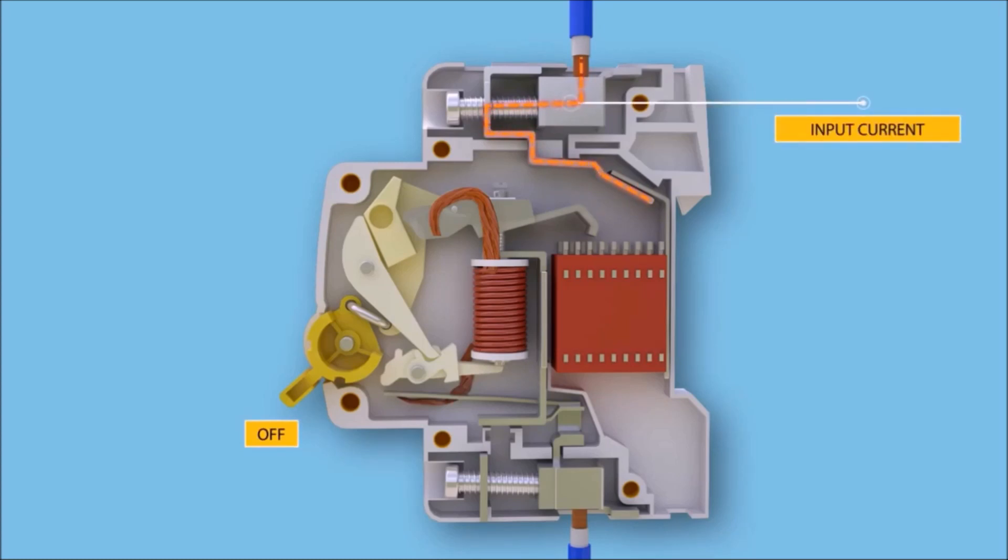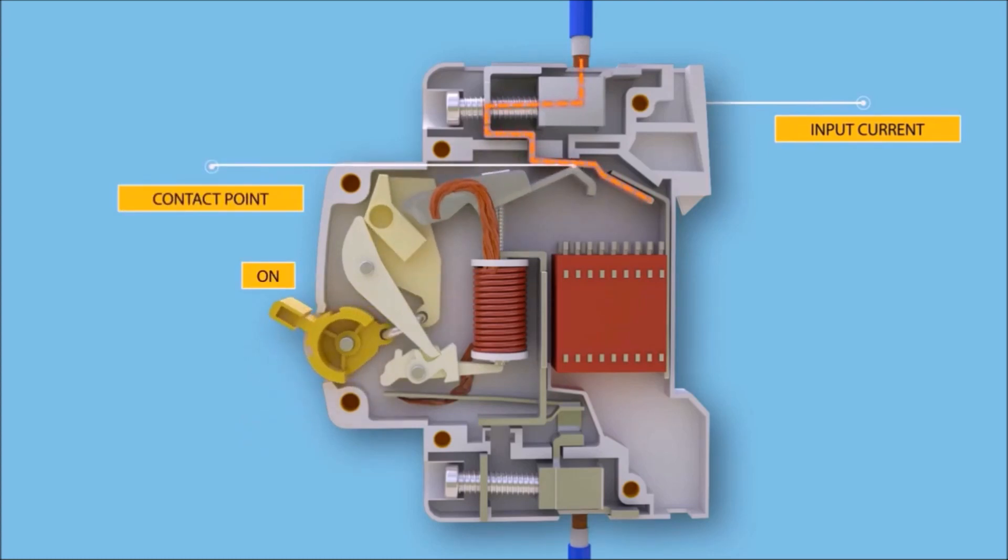Under normal working conditions, the circuit breaker works when we switch the operator manually from off to on position. The electric current carrying path is shown in the animation.